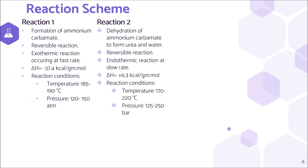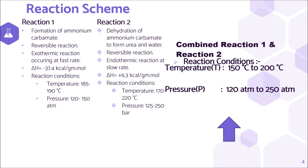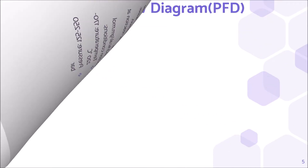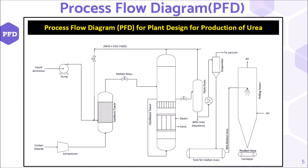The reaction conditions for urea production in the combined reaction are as stated. In the industrial production of urea, the raw materials used are carbon dioxide gas and liquid ammonia. These reactants enter the urea synthesis tower where the reaction takes place, and urea is produced. The reaction occurs in a range of 150 to 200 degrees Celsius and 120 to 250 atmospheric pressure.